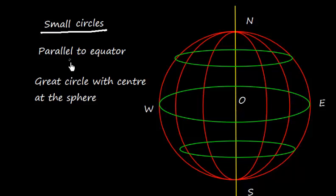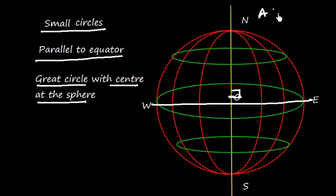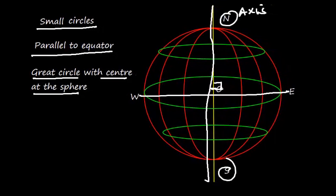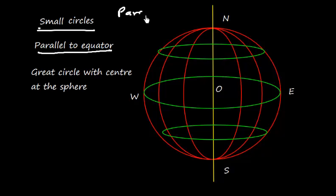Now let us talk about small circles which are parallel to the equator. The equator is a great circle having the center at the sphere, dividing the earth into the northern hemisphere and southern hemisphere. This plane is perpendicular to the axis — the north-south line is the axis. So the equator is perpendicular to the axis and is a great circle. All other small circles which are parallel to the equator are called parallels of latitude.